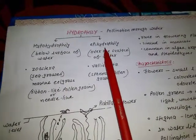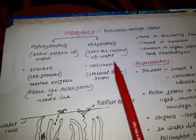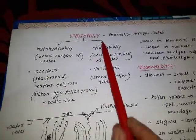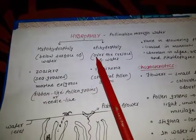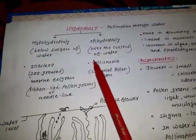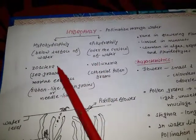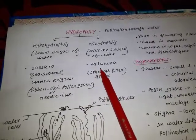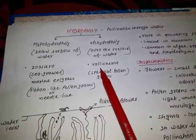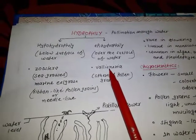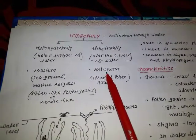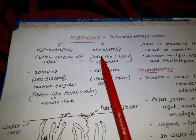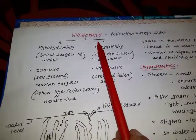The example of epihydrophily is Vallisneria. Pollen grains in hydrophilic flowers — the flowers pollinated through water — are naked, meaning they are not surrounded by exine. Exine is the outermost layer of the pollen grain, which is absent in flowers pollinated through water.